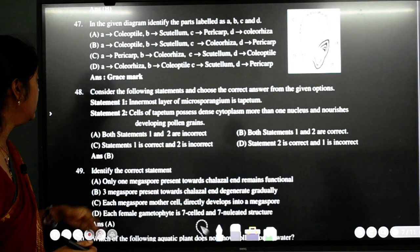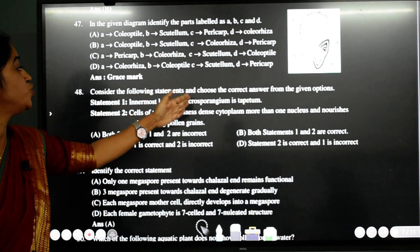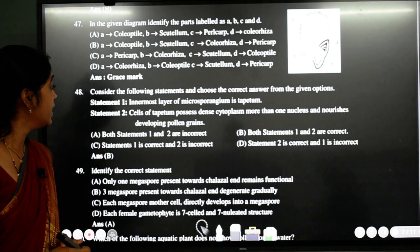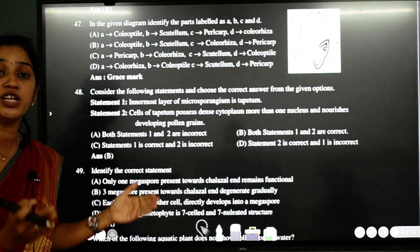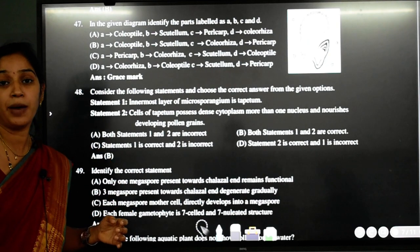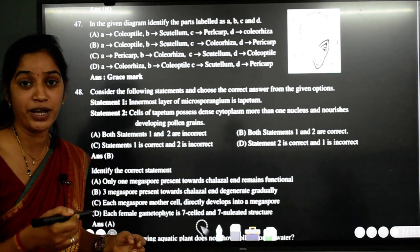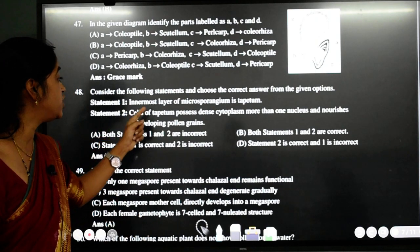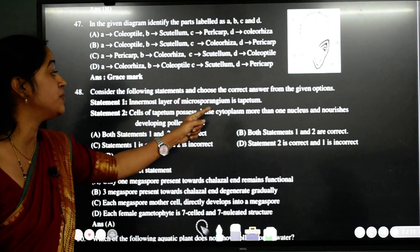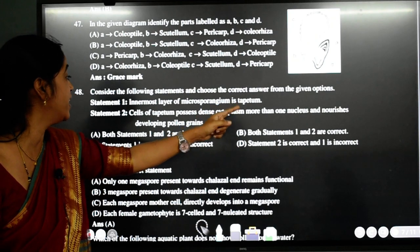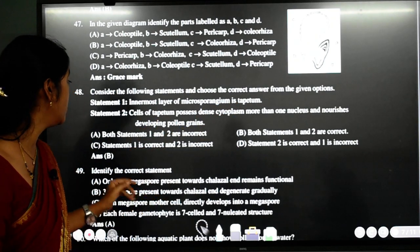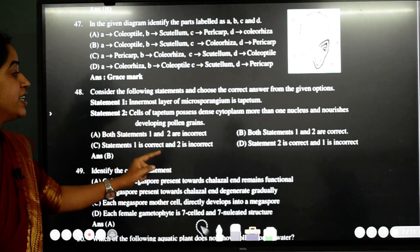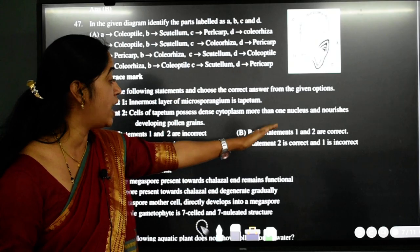48th question. Consider the following statement and choose the correct answer from the given option. Statement one says that innermost layer of microsporangium is tapetum. Yes students. There are four layers. Epidermis, endothecium, middle layer and tapetum is the innermost layer. Correct. Second one. Cells of tapetum possess dense cytoplasm and more than one nucleus and nourishes the developing pollen grain. 100% correct. So both the statements 1 and 2 are correct. So the answer here is B.